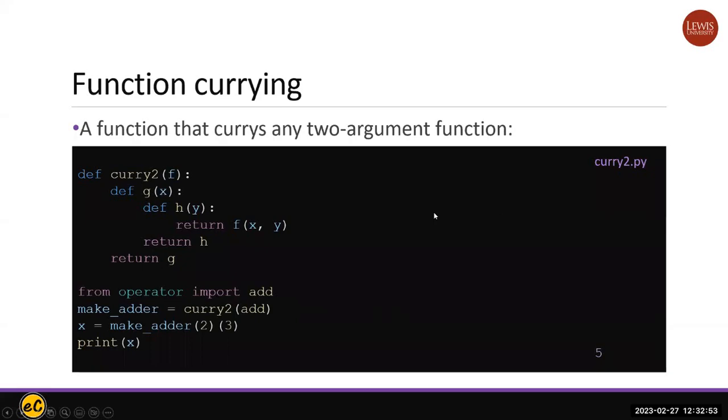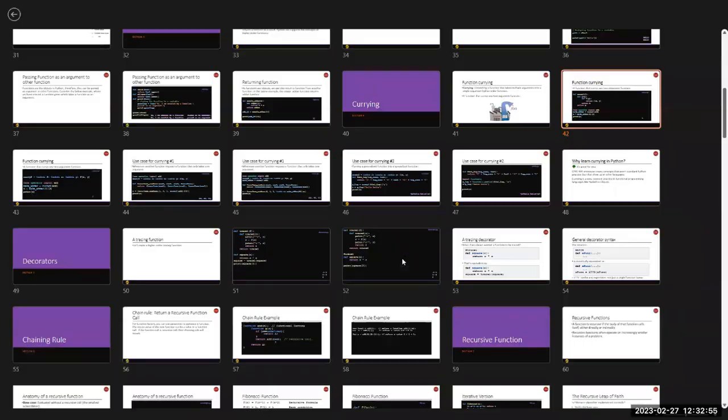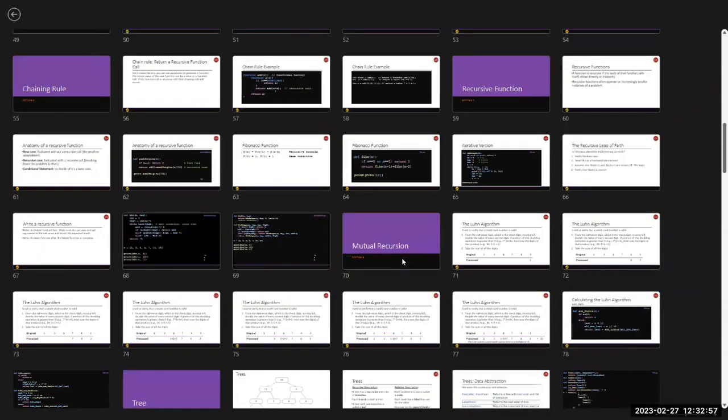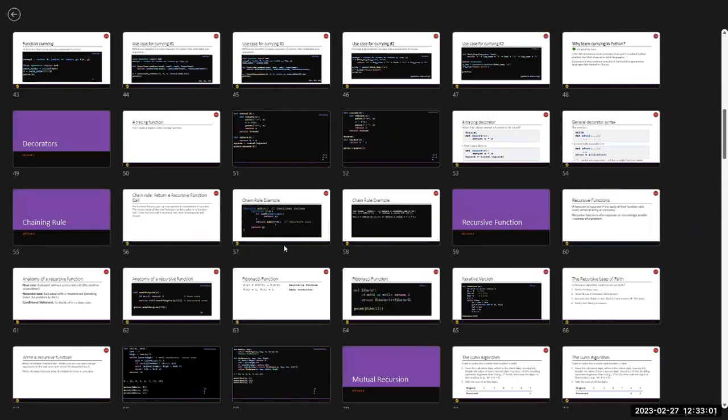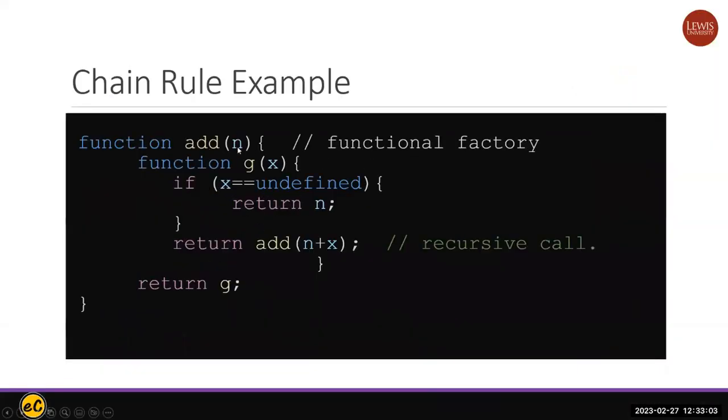So let's look at this chain rule for the recursive call. Basically here I have an F function. This F function will generate a G function. If this G function doesn't have parameters, say you do add(1) and there is no parameter, you finish.